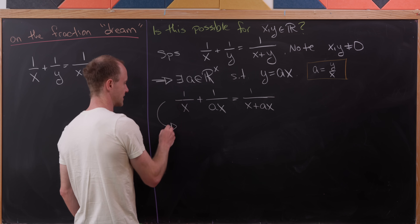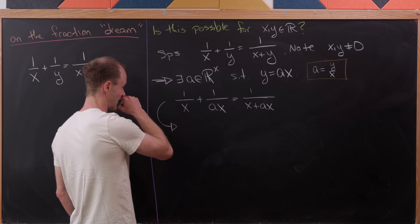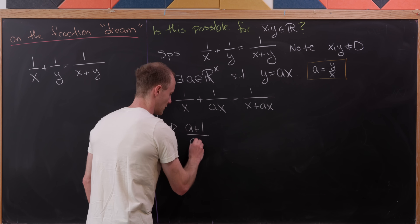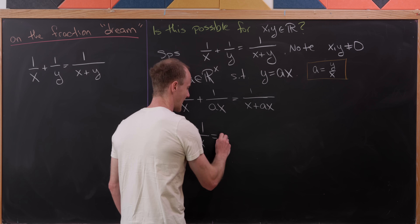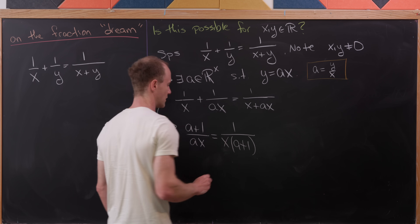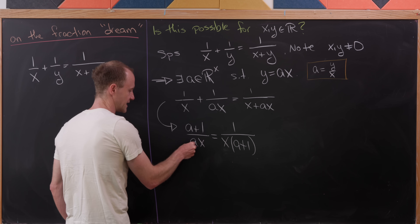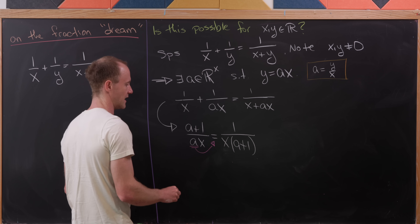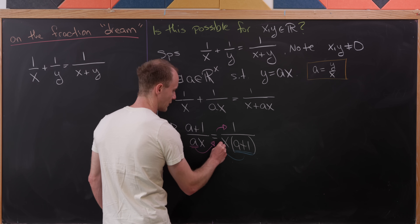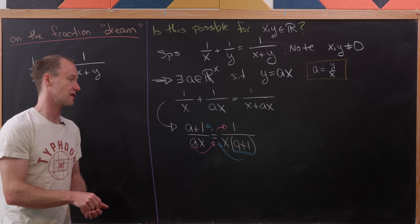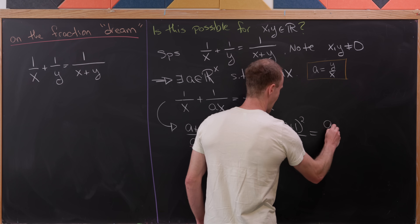Now let's combine terms. On the left-hand side, we have a common denominator of ax, giving us (a+1)/(ax). On the right-hand side, we factor out x from the denominator to get 1/(x(a+1)). Now doing a bit of cross multiplication — taking the a up to the numerator of the right-hand side and (a+1) up to the numerator of the left-hand side — we get (a+1)²/x = a/x.